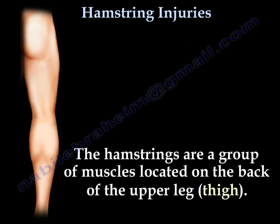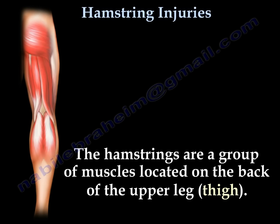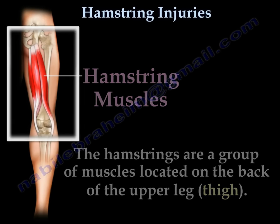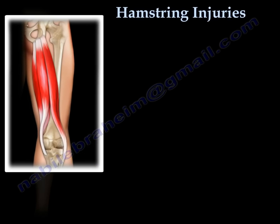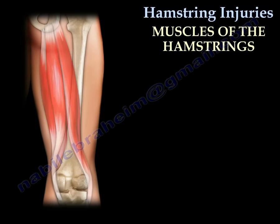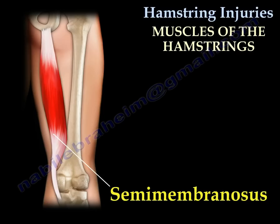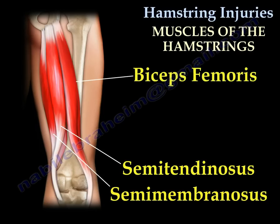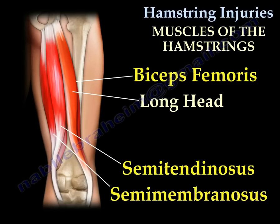Hamstring injuries. The hamstrings are a group of muscles located on the back of the thigh. The muscles of the hamstrings are the semimembranosus, semitendinosus, and the biceps femoris — which has a long head and a short head.